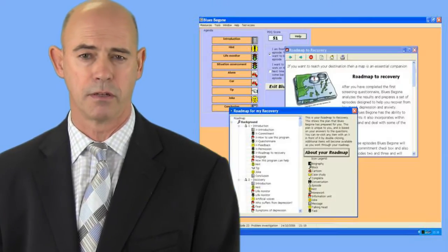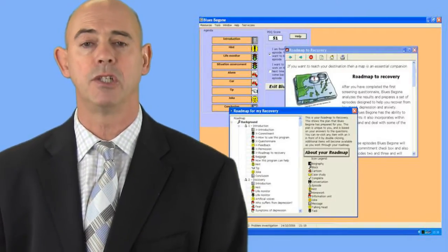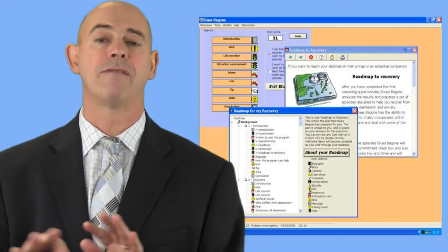In the first instance, you install Blues Be Gone on your computer and then pretty much the first thing it will do is it will ask you a number of questions and based upon your answers to those questions, it will compile a personalised roadmap to your recovery. Now your roadmap to recovery is unique to you, no two people will ever have the same roadmap.